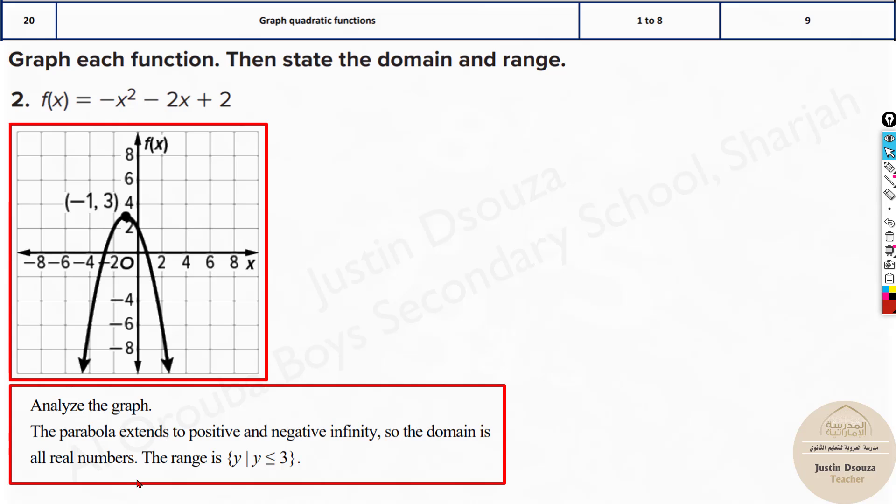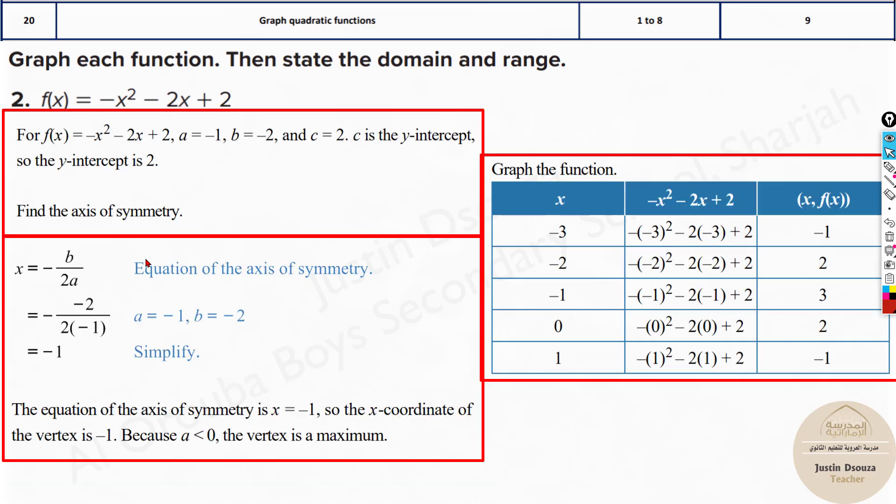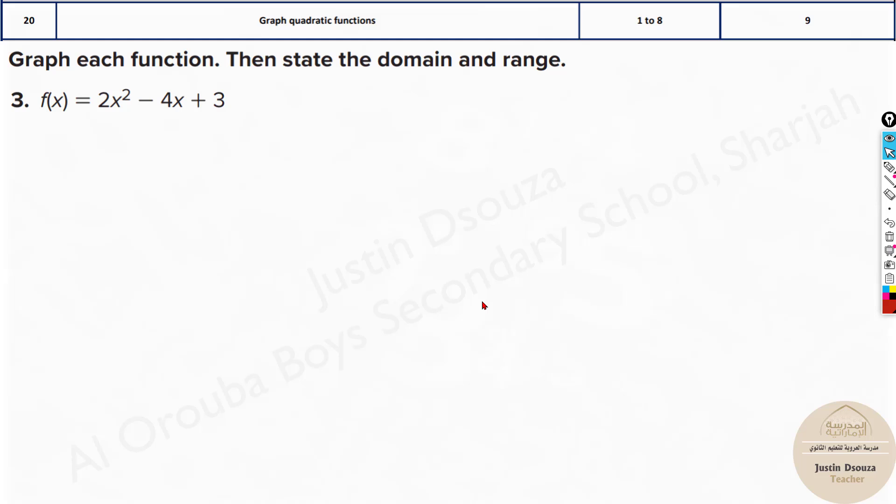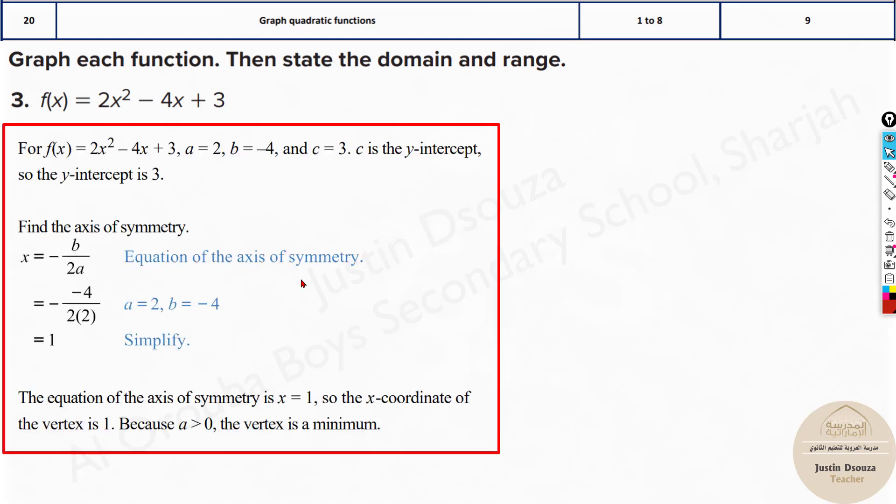Now here, domain is always all real numbers, but the range is all values less than or equal to positive 3. Now, which is this point? That is the vertex y value. See over here, the vertex is -1, right? What is the y value? Here, it's 3. Since it's minus, it'll be less than or equal to -3. If it was plus, it would open upwards, it'll be greater than or equal to. So here, we have the domain and range. Please do solve all these problems. It's very simple.